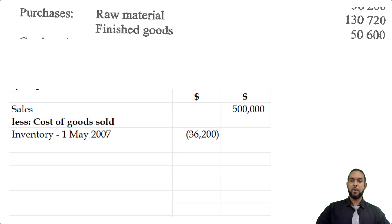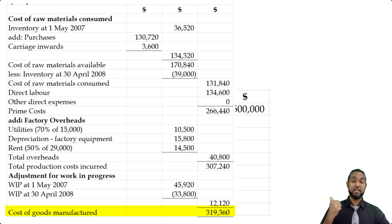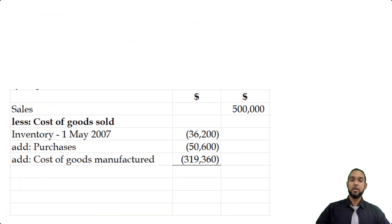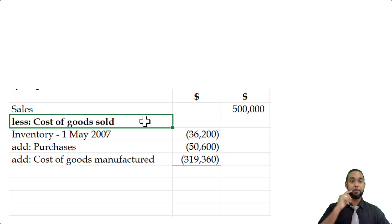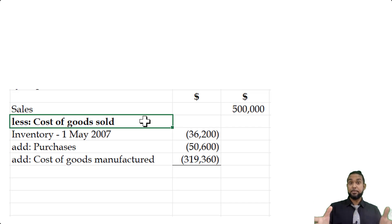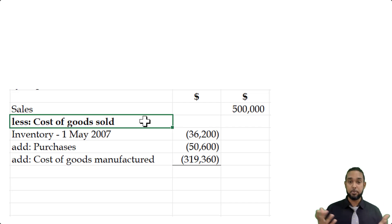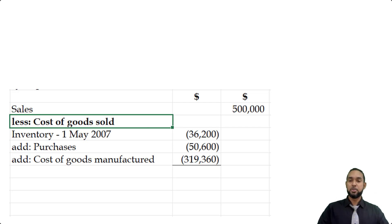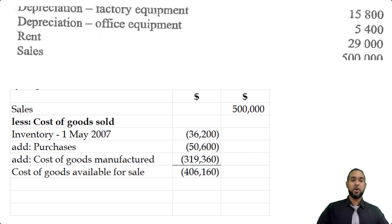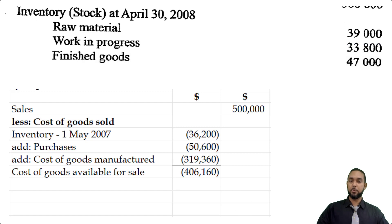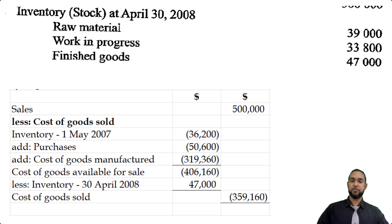We add purchases of finished goods of $50,600 and the cost of goods manufactured from the manufacturing account of $319,360. Normally we have one or the other, but it is possible for a company to manufacture its own goods and also purchase other items to resell. We add all of these together to get cost of goods available for sale, then subtract closing inventory of finished goods of $47,000, giving a cost of goods sold of $359,160. Subtracting from sales gives a gross profit of $140,840.